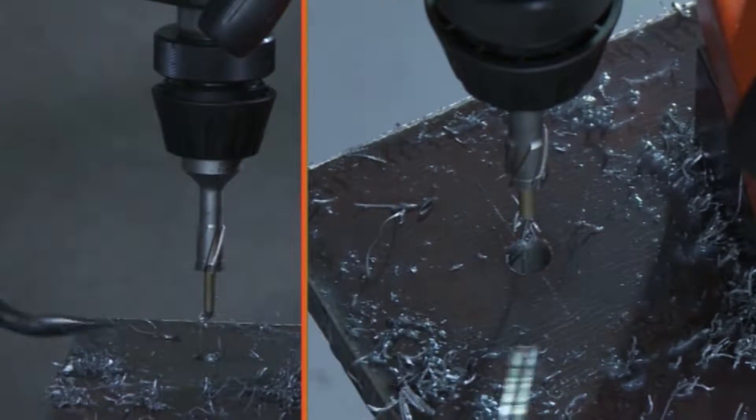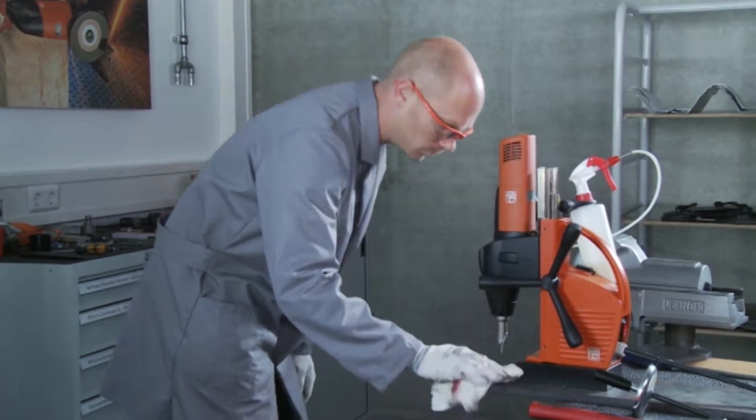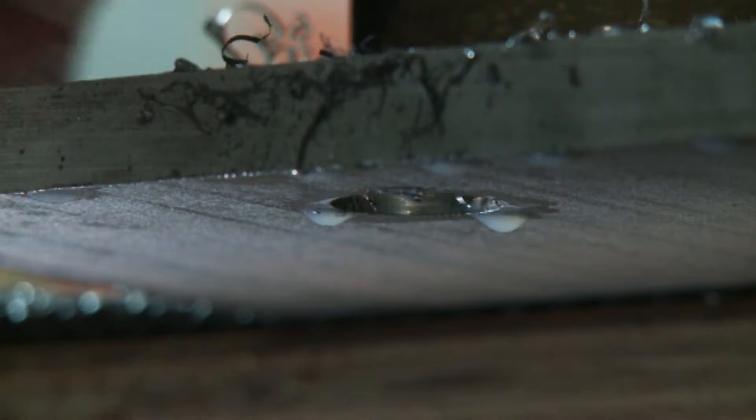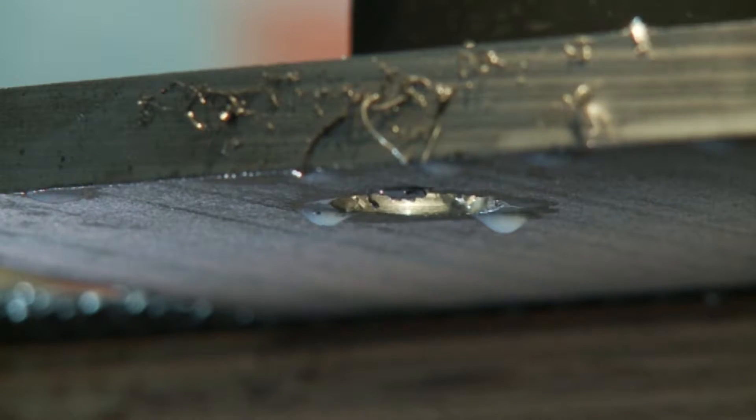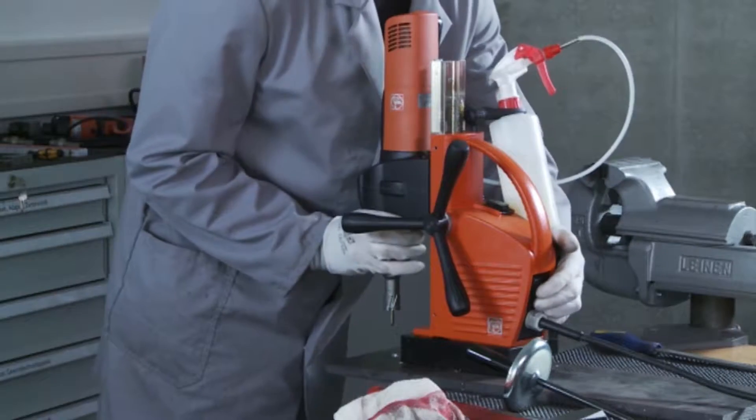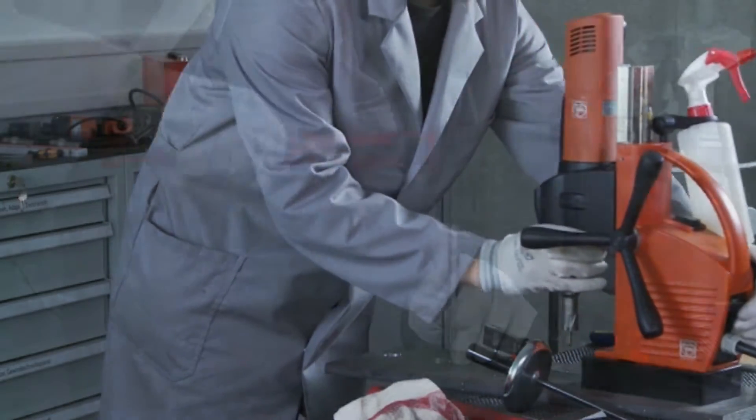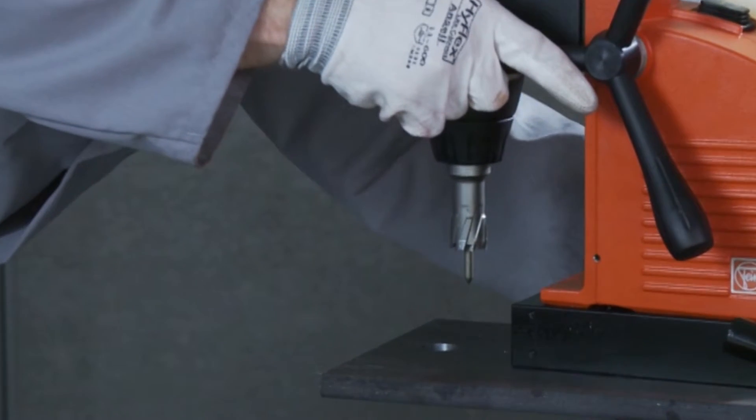To drill an overlapping hole, move the core drilling unit. Deactivate the magnet and slide the core drilling unit to the next hole position, then reactivate the magnet.